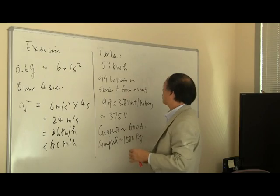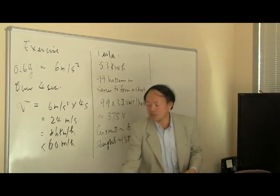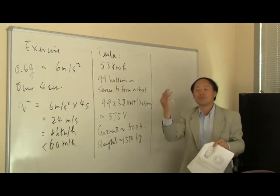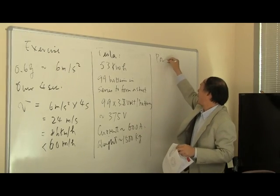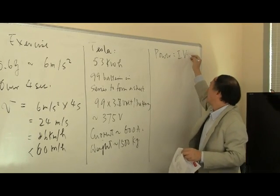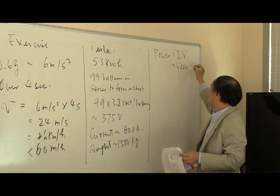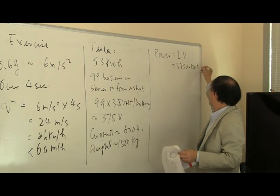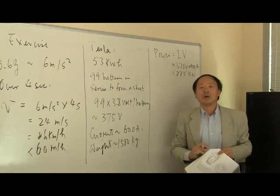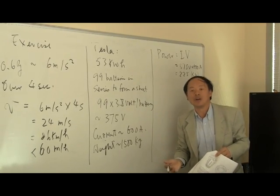So what we're going to do is several calculations. And the first one we're going to calculate is the power that is generated by the Tesla. Now, we actually have done it before. As we said, power is equal to current times voltage. And therefore, if you multiply the two, which is 375 volts times 600 amperes, that gives you 225 kilowatts. So the 225 kilowatts is roughly about 300 horsepower.